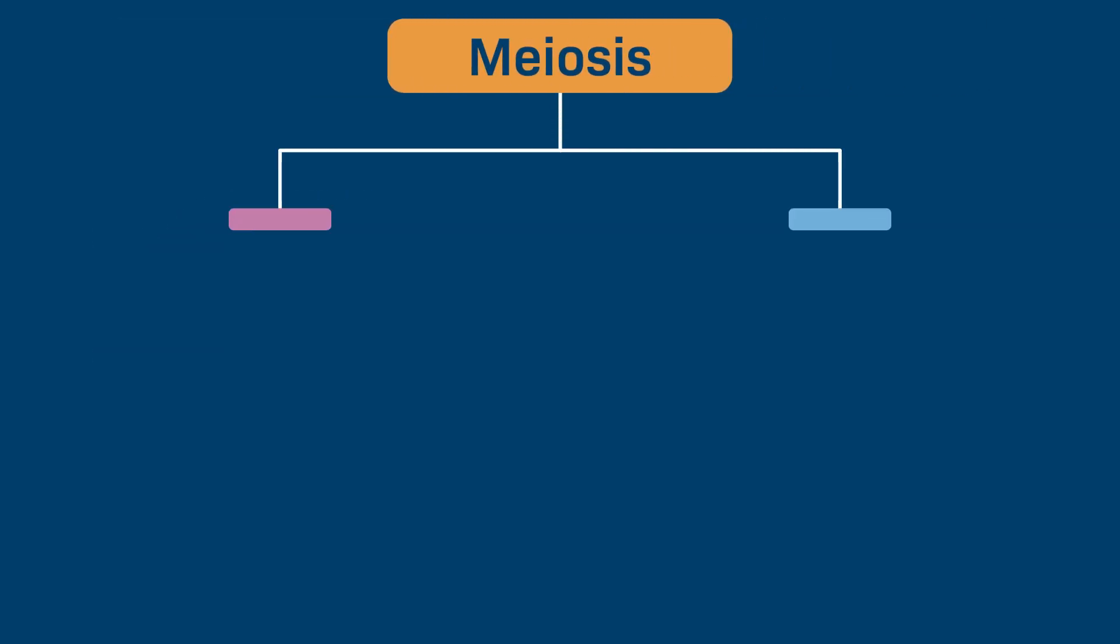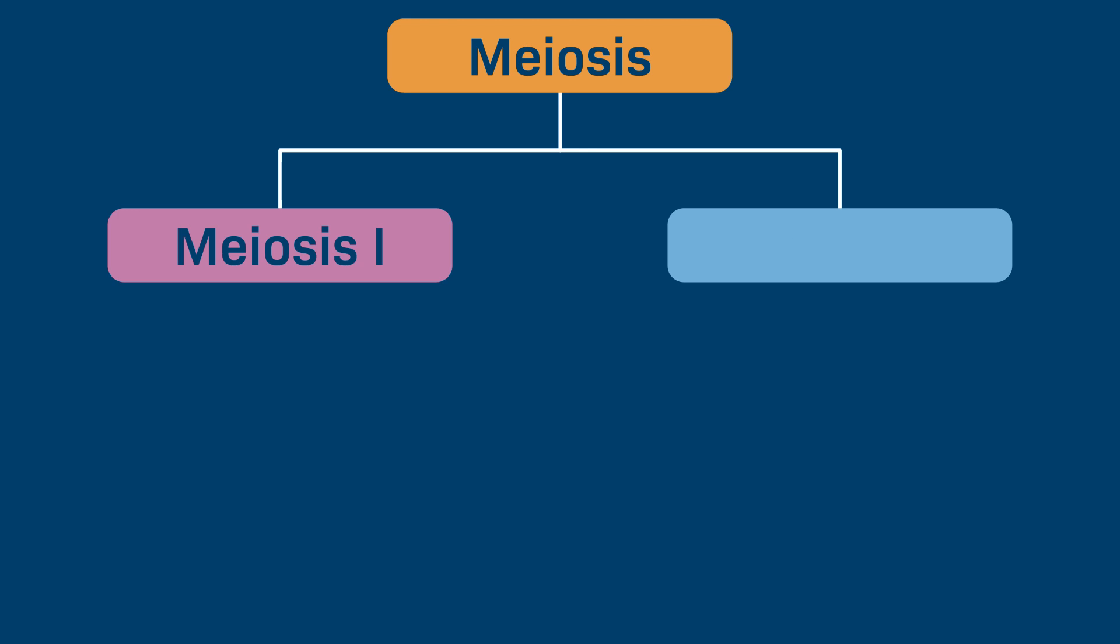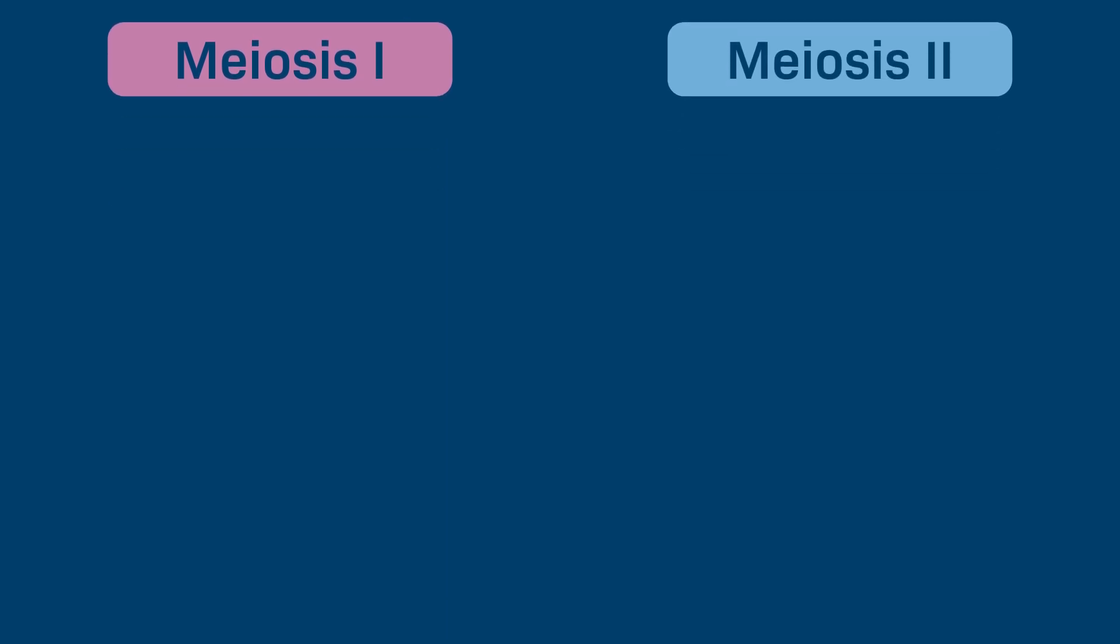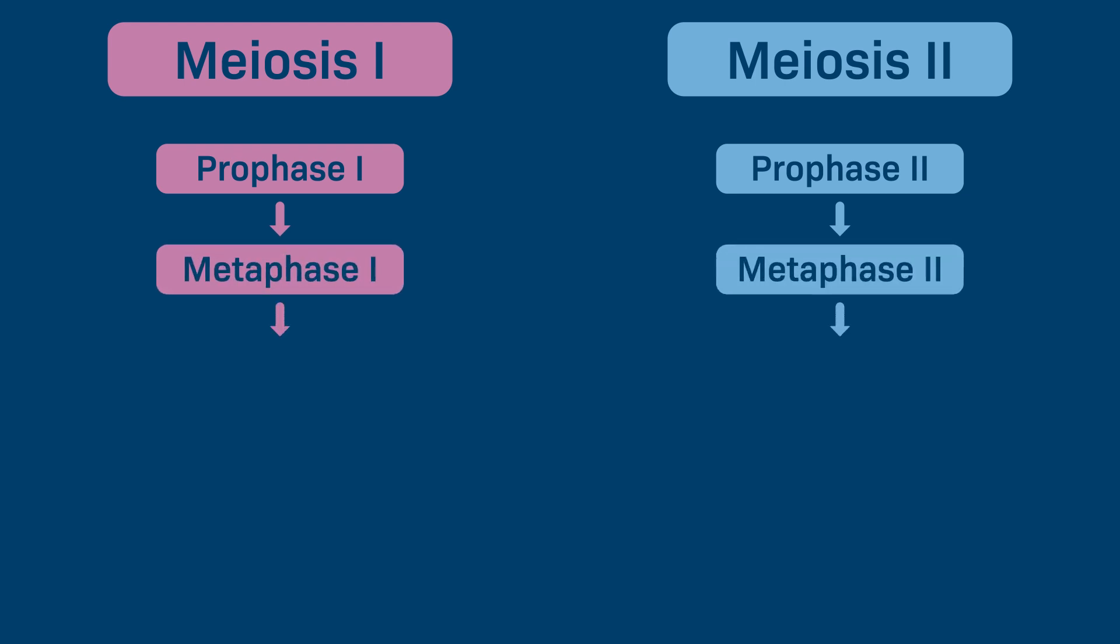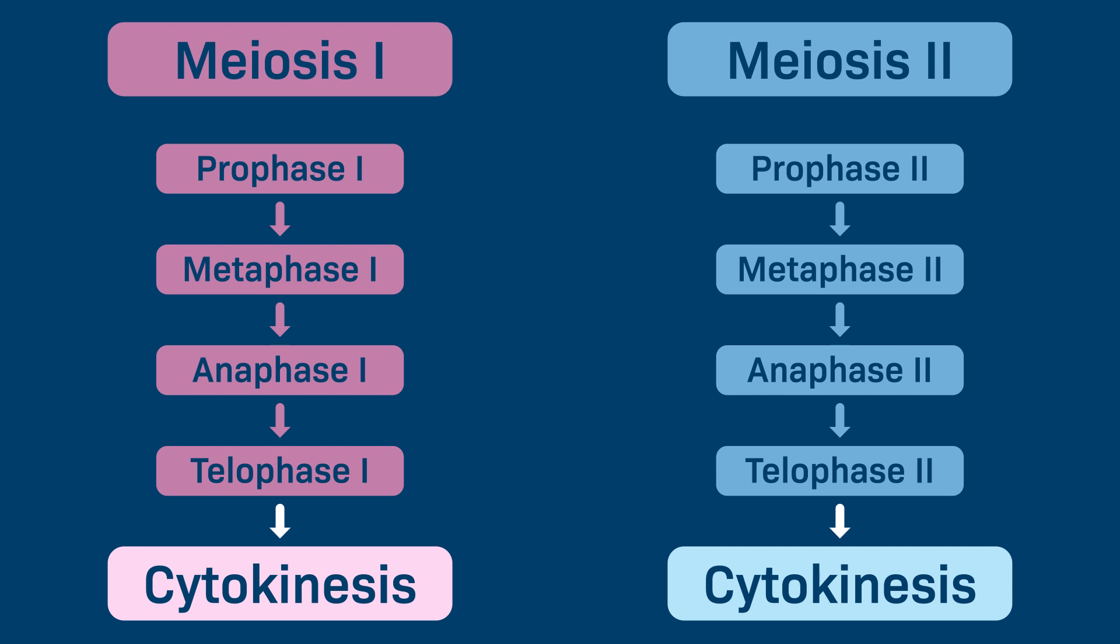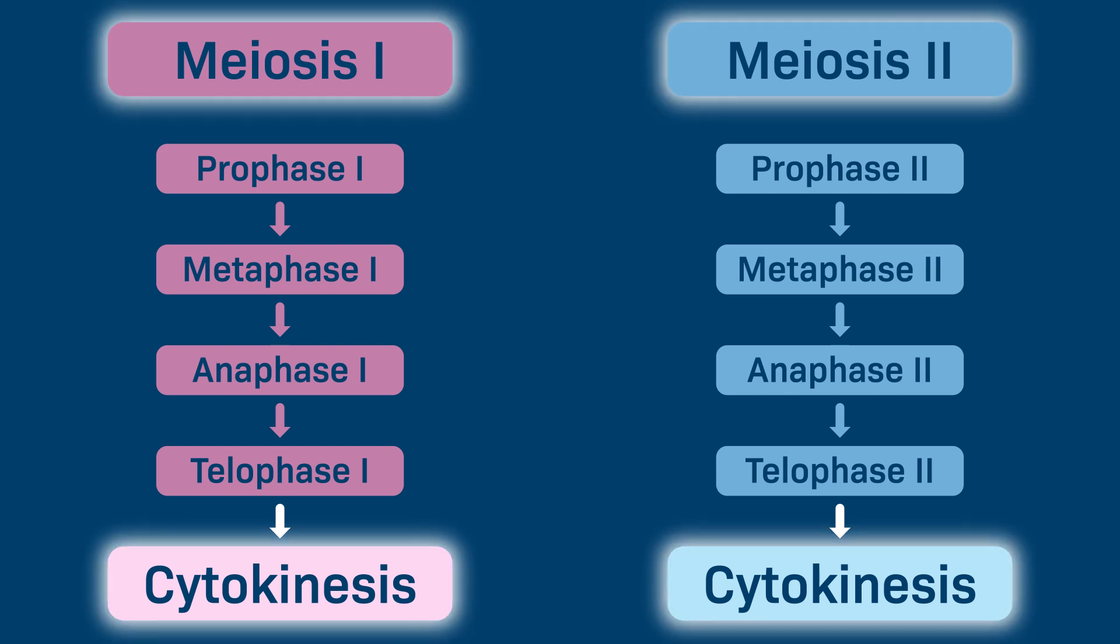Meiosis consists of two divisions, meiosis I and meiosis II. Each of these divisions has four different phases: prophase, metaphase, anaphase, and telophase. Each meiotic division is followed by a process known as cytokinesis. Let's learn more about meiosis and cytokinesis.